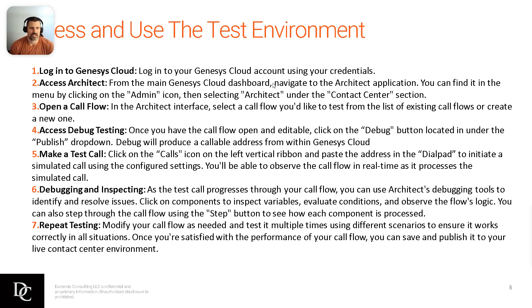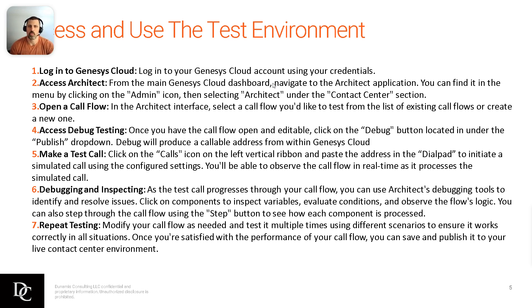As that test call progresses through your call flow, you can use Architect's debugging tools to identify and resolve issues — clicking on components, inspecting variables, evaluating conditions, and observing the flow's logic. If something's not working right, reverse it and see what happens. For example, if there's a decision where flow.callAgents is greater than zero, make it less than zero and see what happens. Play with it a little so you understand what effect each change makes. And then repeat your testing — any change you make, repeat testing multiple times, go down every single path, try to make it error out. Even if you put something into a data action, change the input variable to something that's not right and see what path it goes down. Make sure everything from start to finish — happy paths and fail paths — are working correctly.